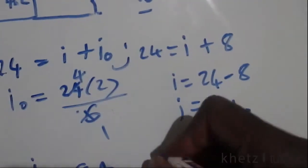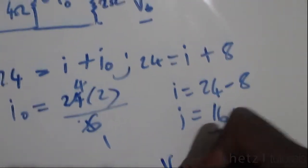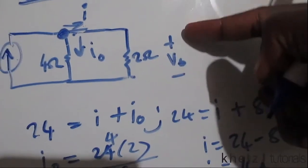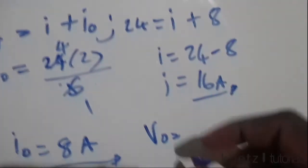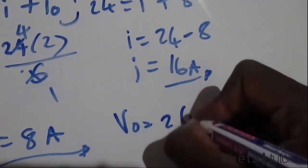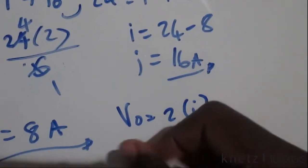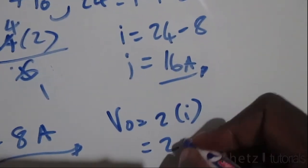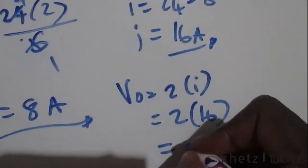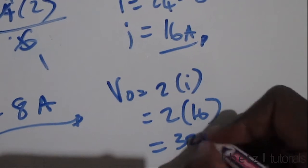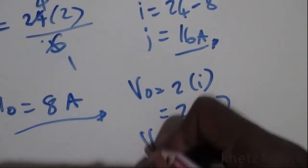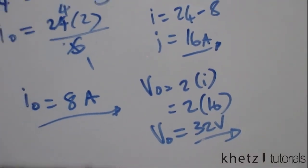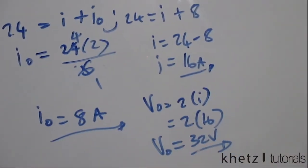Moving on to v_o: v_o is across the two ohm resistor. The current i enters through the positive terminal, so v_o equals two multiplied by i. With i equal to 16, v_o equals two multiplied by 16, which is 32 volts. These are all our values for t less than zero.